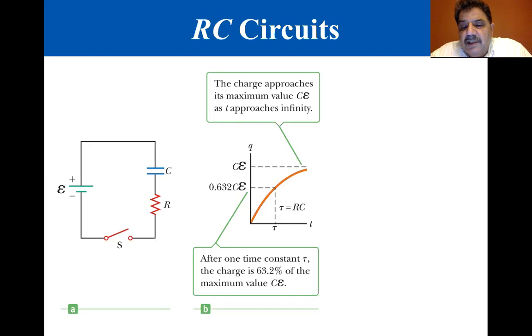The charging process continues until the capacitor is charged to its maximum equilibrium value, which is Q. I hope you can see that Q equals C epsilon, where epsilon is the battery voltage. Here it even says epsilon is the maximum voltage across the capacitor. Once the capacitor is fully charged, the current in the circuit is zero.